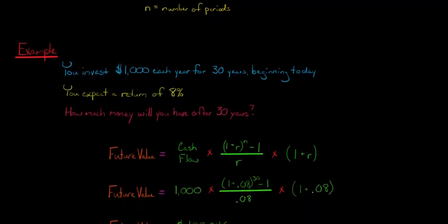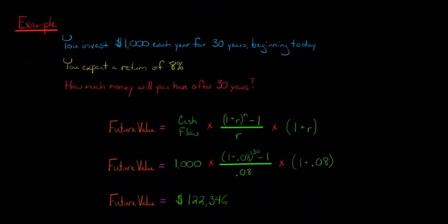Now, if you calculate all that out, what that would give you is an ending balance of $122,346. Now I've rounded there, we're off a few pennies. But $122,346 is what you would have in the account if beginning today you stashed away $1,000 each year for 30 years and earned a return of 8%.